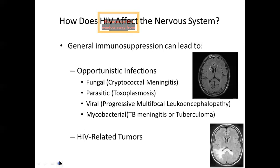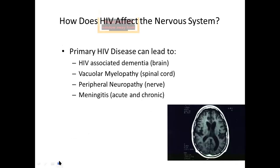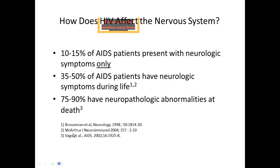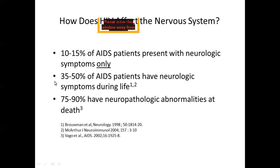HIV-related tumors like HIV lymphoma, primary CNS lymphoma, or secondaries can also affect the CNS. Primary HIV disease per se can lead to HIV associated dementia when it infects the brain, vacuolar myelopathy from spinal cord affection, peripheral neuropathy, and aseptic meningitis both acute and chronic. 10 to 15 percent of AIDS patients present with neurologic symptoms only, 35 to 50 percent have neurologic symptoms during life, and as high as 75 to 90 percent have neuropathologic abnormalities at death.